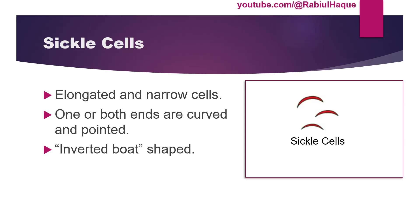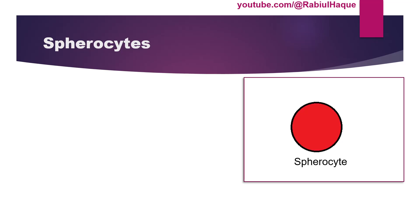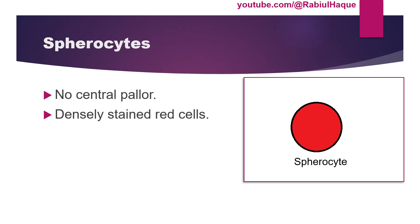Another morphology is called spherocytes. Normal red blood cells are biconcave circular disc shape, so the central area normally contains the least amount of hemoglobin, giving one-third central pallor. But in spherocytes the central pallor will be absent, so the entire cell will appear red in color — circular or spherical in shape if thought of three-dimensionally.